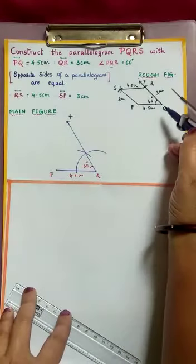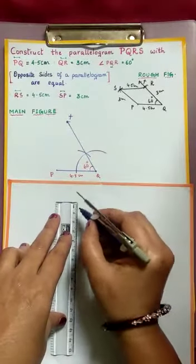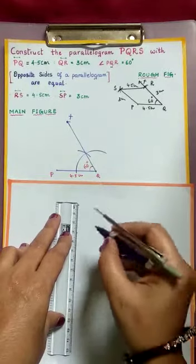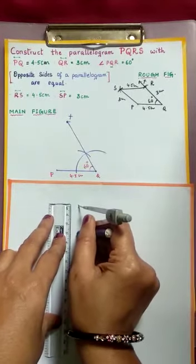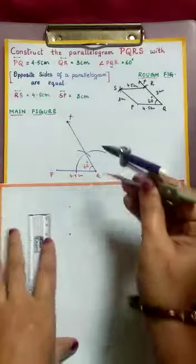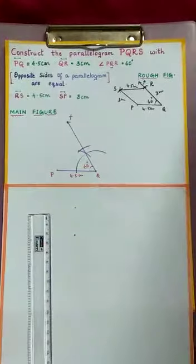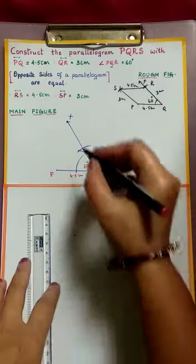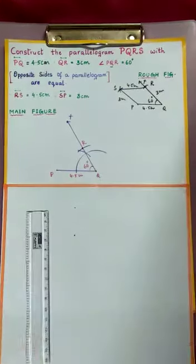Next, with Q as center, taking 3 cm radius — take starting point at 0, ending point at 3 — take this radius length of 3 cm. With Q as center, cut this QX ray, which intersects at R. Name this point as R.